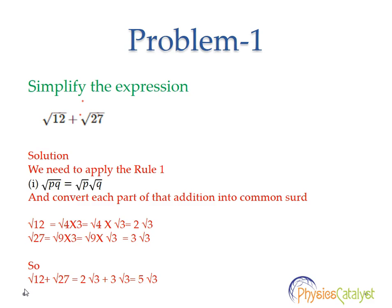Similarly, root 27 is written as root of 9 multiplied by 3. That is equal to root 9 multiplied by root 3, which equals 3 root 3.